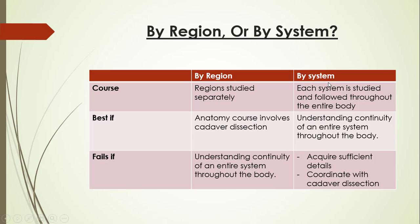Systematic anatomy is different: each system is studied and followed throughout the body. For example, the study of the cardiovascular system looks at the heart, valves, and all blood vessels in the body. When that is completed, you study the nervous system — the brain, spinal cord, and nerves. This approach continues for the whole body until every system, including nervous, skeletal, muscular, gastrointestinal, respiratory, lymphatic, and reproductive, has been studied.